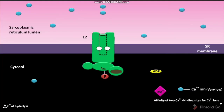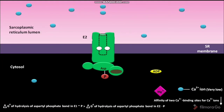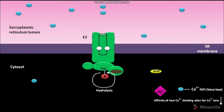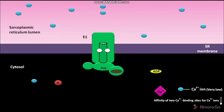The free energy, or delta G0, of hydrolysis of the aspartyl phosphate bond in E1P is greater than the delta G0 of hydrolysis of the aspartyl phosphate bond in E2P. This reduction in delta G0 of the aspartyl phosphate bond powers the E1 to E2 conformational change. The aspartyl phosphate bond then undergoes hydrolysis to produce inorganic phosphate (Pi), which is released to the cytosol. Due to this dephosphorylation, the E2 conformation is changed back to E1.